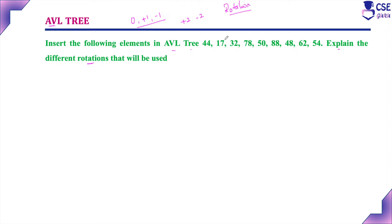There are four types of rotations used to convert an unbalanced binary search tree into a balanced one: single right rotation, single left rotation, double left-right (LR) rotation, and double right-left (RL) rotation. We implement whichever rotation is required whenever the AVL tree becomes unbalanced during insertion.